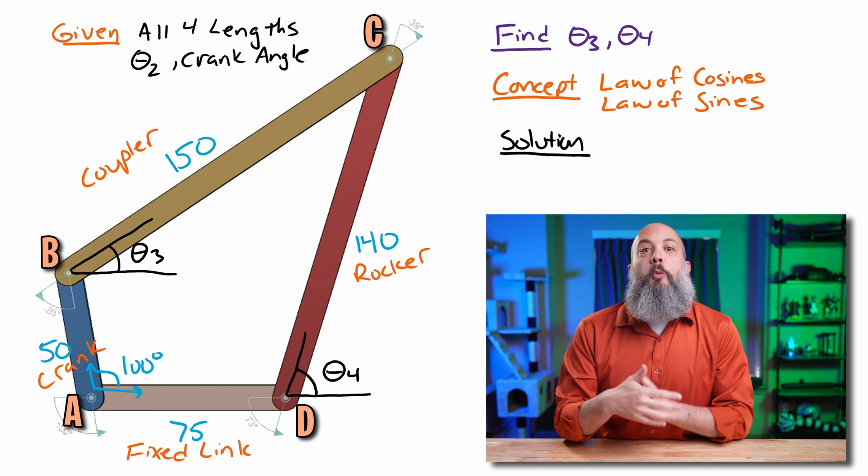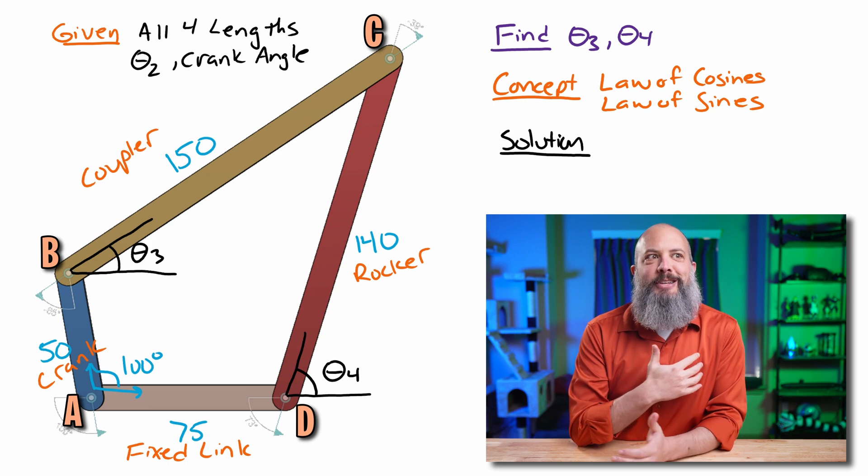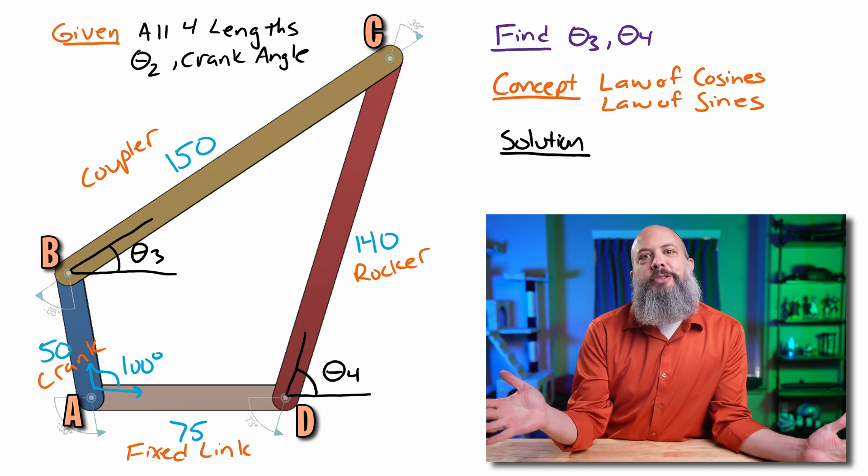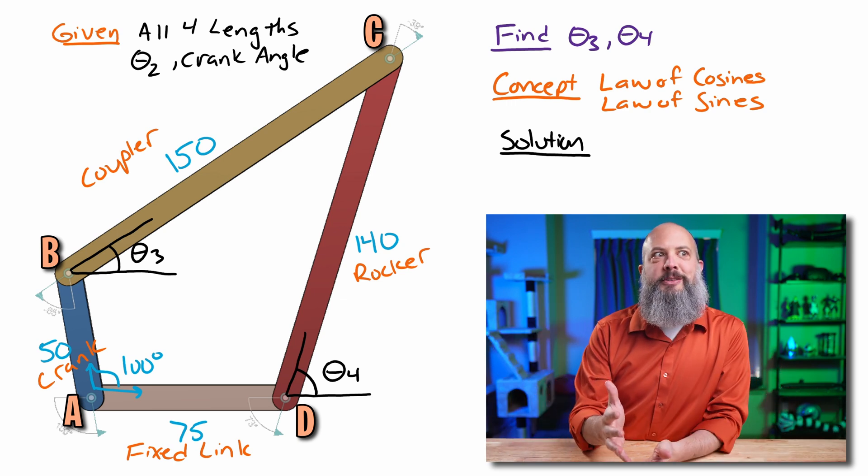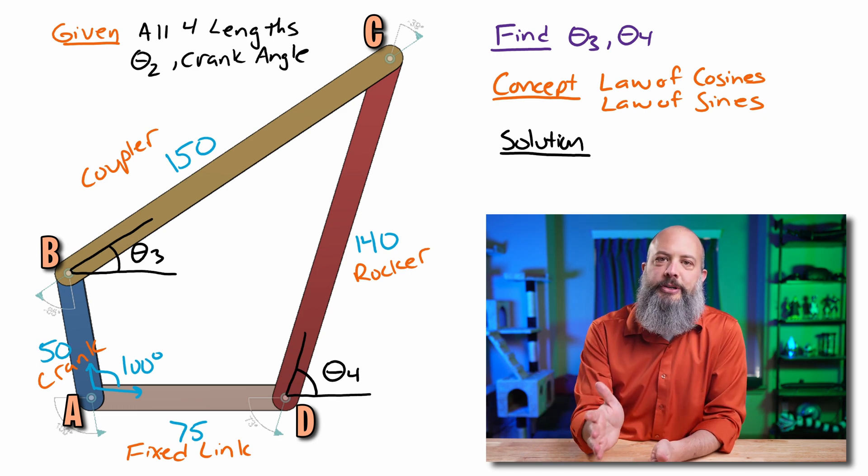First, a super quick mini lecture about why you would want to find theta 3 and theta 4, and then we'll actually do it. This might seem a little bit complicated the first time you do it, but you're going to have to do this calculation a million times in your machinery class, so once you get past about the third time, it's going to be super easy and routine and totally normal for you.